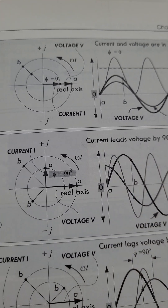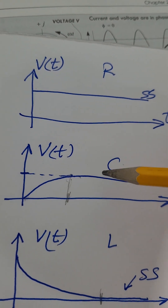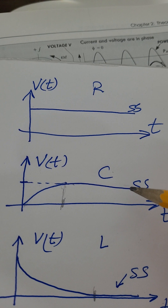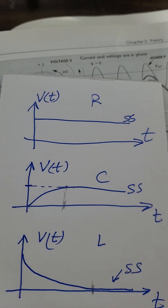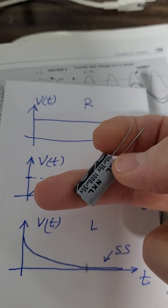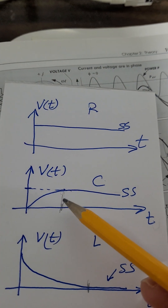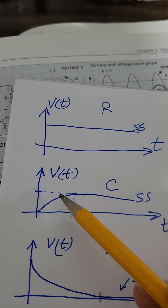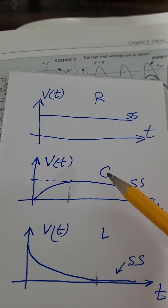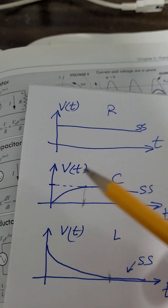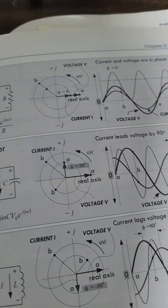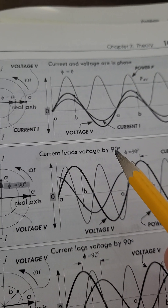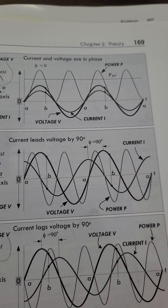In the capacitor, the voltage reaches steady state after time — so the voltage came next, and the current came first. That's why we say the current in the capacitor leads the voltage. The current leads means it came first. So the current in the capacitor leads the voltage by 90 degrees.